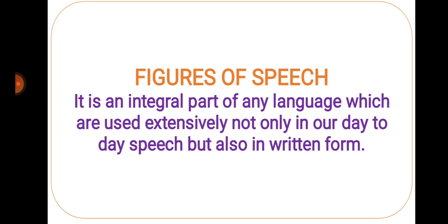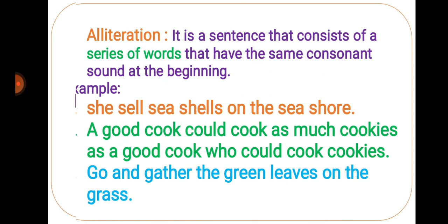The first one is alliteration. It is a sentence that consists of a series of words that have the same consonant sound at the beginning. For example, she sell sea shells on the sea shore.